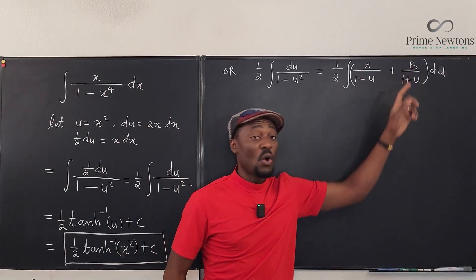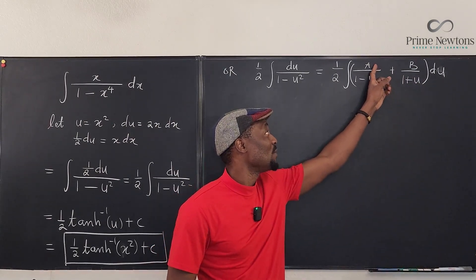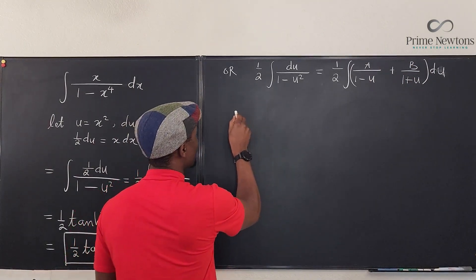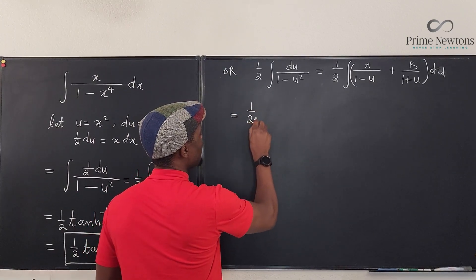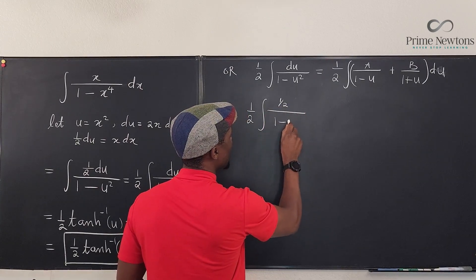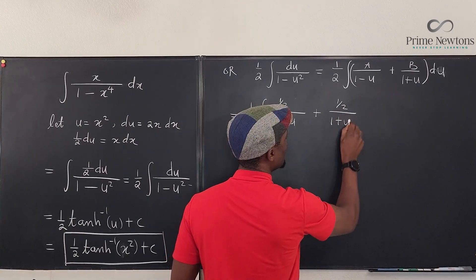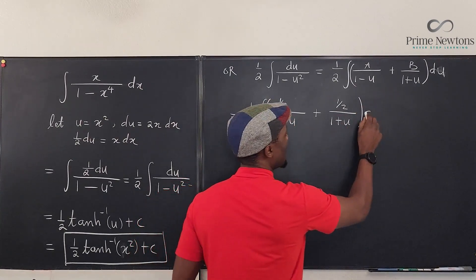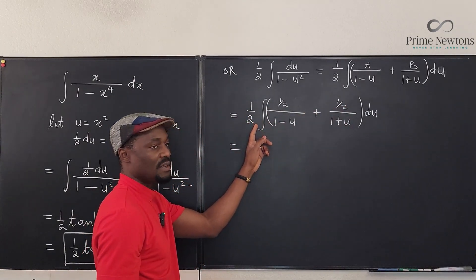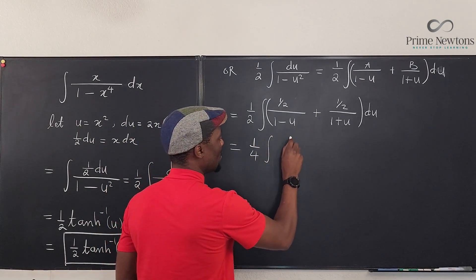So we can say that this is equal to ½ times the integral of ½ over 1 - u plus ½ over 1 + u, both integrated du. Well we can pull this ½ out, if we factor out ½ it's going to come out here and multiply this ½, so we have ¼ and then we have the integral of 1 over 1 - u plus 1 over 1 + u du.